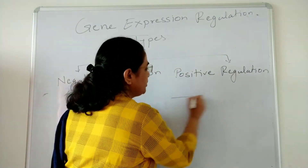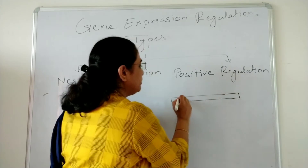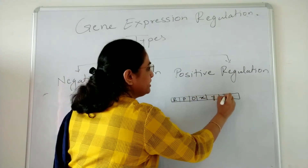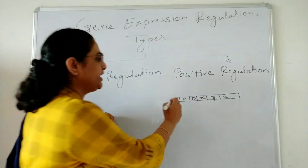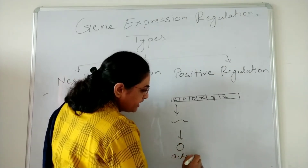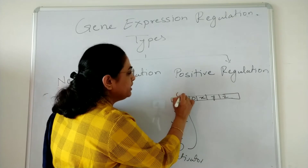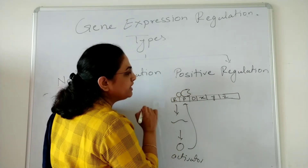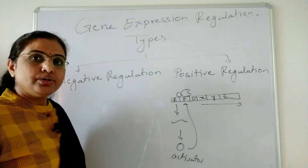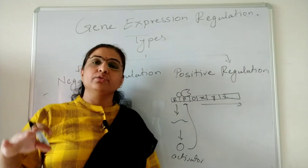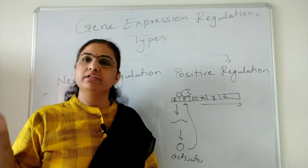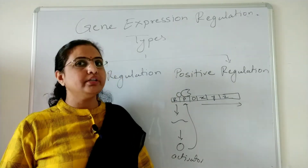In positive regulation, the operon has a regulatory gene, a promoter, an operator, and structural genes X, Y, and Z. The regulatory gene synthesizes a product called the activator, which binds near the promoter, allowing RNA polymerases to load and carry out transcription. In negative regulation, the process is inhibited — transcription and gene expression are prevented.